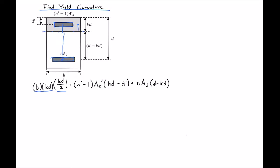So we can plug in all our known values. We'll have B, which is 12 inches divided by 2, times KD, our unknown squared, plus N prime for 4 KSI is 7.1. AS is our 3 number 6 bars, 0.44 inches squared. And then KD is our unknown. We just solved for D prime, 2.25.